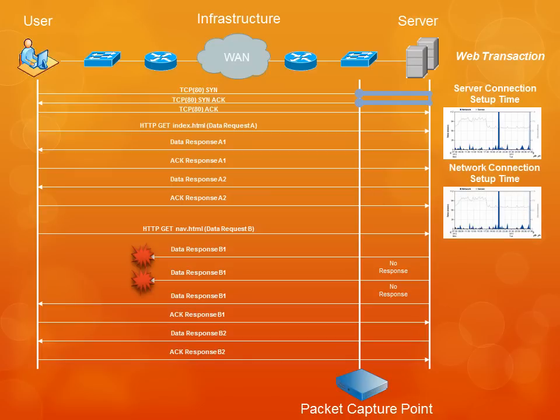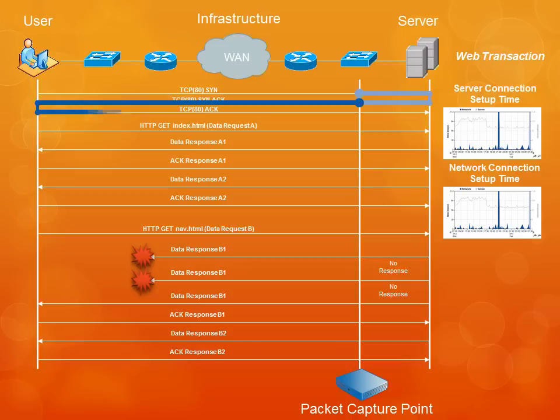The second metric is network connection setup time. This metric measures how long it takes the network to transmit the smallest possible packet — the handshake packets have no payload — from the server out to the user and back. It's measured as the delta between the transmission of the SYNACK packet and the receipt of the ACK packet. This metric gives a good indicator of the minimum network round trip time between the server and the user. Under optimum circumstances, the minimum value of network connection setup time will indicate the minimum possible round trip time on a physical network constrained by distance and bandwidth.